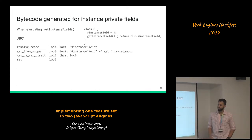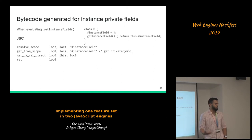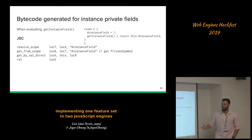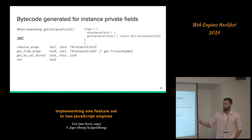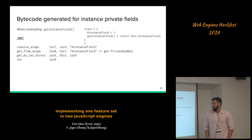In JavaScriptCore we use the 'get-by-val-direct' instruction for private field access. We resolve the scope to find where the private symbol is stored, get it using 'get-from-scope', and access it using 'get-by-val-direct'. To reinforce: this instruction will throw a TypeError if it cannot find the private name in the object itself.